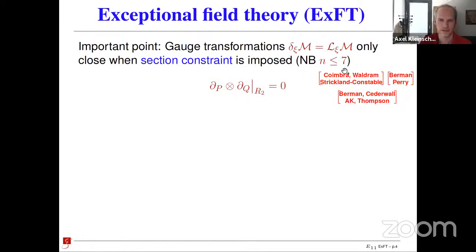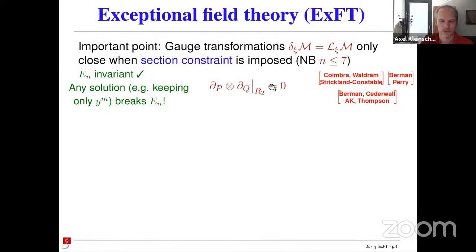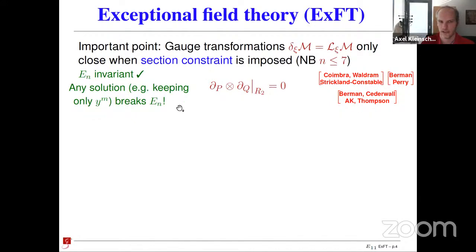The role of R_2 is that you can use it to close the algebra by imposing what is known as the section constraint. The section constraint means that derivatives in the extended coordinates acting on fields must vanish along the R_2 component in the tensor product. If this is satisfied, the algebra closes — something you can show by explicit calculation up to E_7. This constraint is completely invariant under E_N, so imposing it does not break the symmetry. However, any explicit solution — such as keeping only the torus coordinates y_m — will spontaneously break the symmetry.